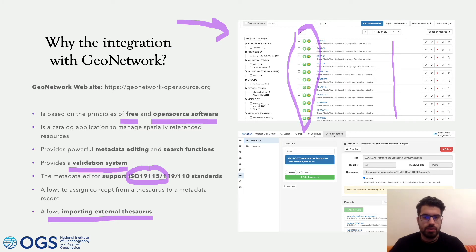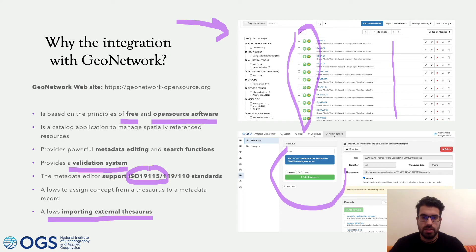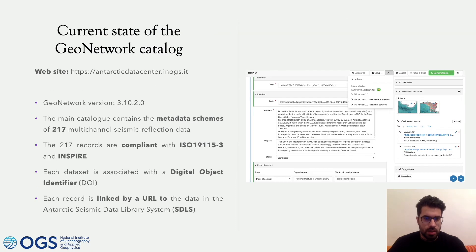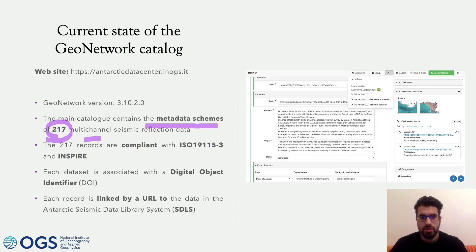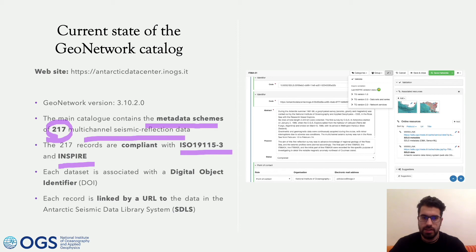In our case, we have chosen to import the cDataNet thesaurus in order to describe concepts for our metadata scheme. Our catalog nowadays consists of 217 metadata schemes for multi-channel seismic reflection data. They are all compliant with ISO standard and INSPIRE, and each dataset is associated with a DOI.